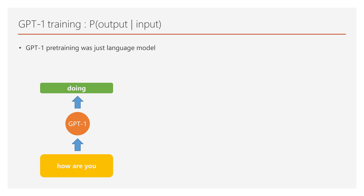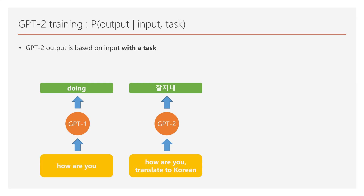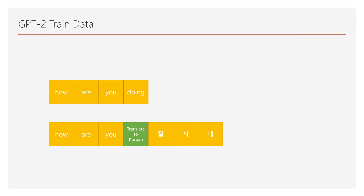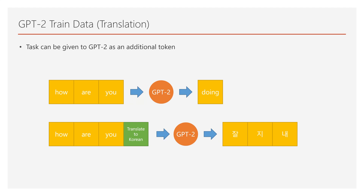When you train a normal language model with raw text, you can train it to output 'doing' given the input tokens 'how are you'. When you train GPT-2, you can give a special task token with input tokens. For example, when the input is 'how are you' and the given task is 'translate to Korean', you can train GPT-2 to output the Korean translated text. GPT-2 also can do next token prediction. You can check there is a 'translate to Korean' special token in the training data, and you can see how GPT-2 can make different outputs while still being a language model — you assign tasks to GPT-2 by just adding special task tokens next to the input.